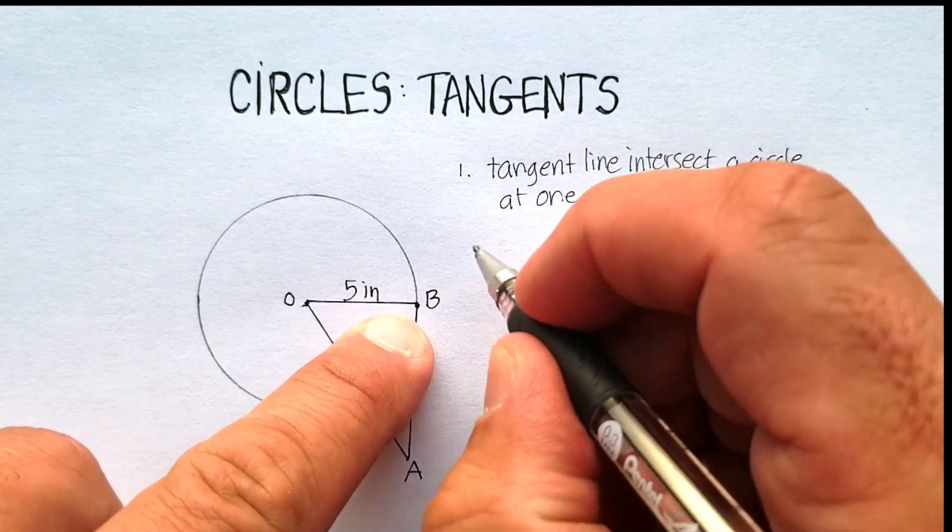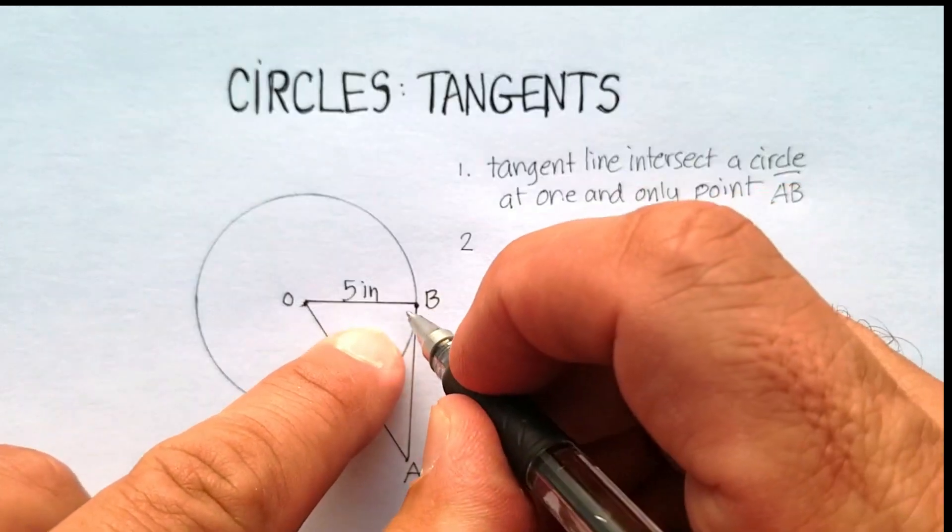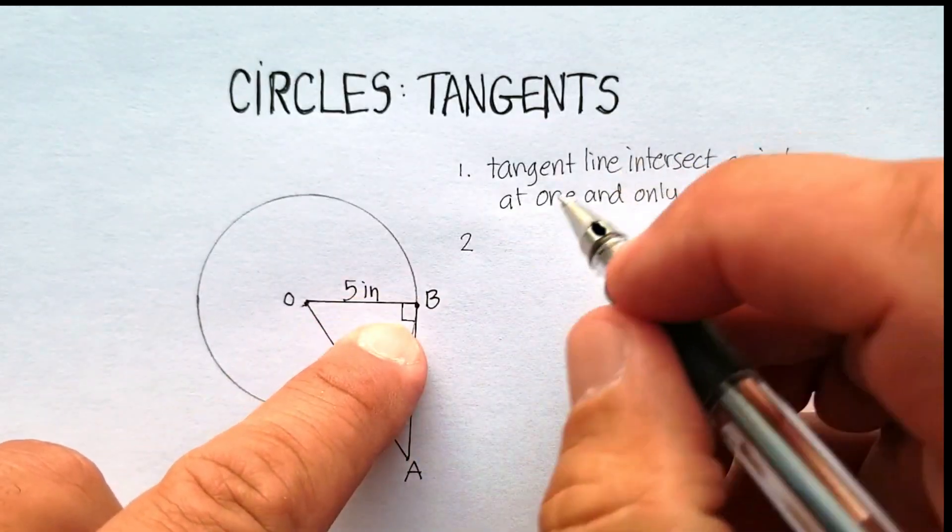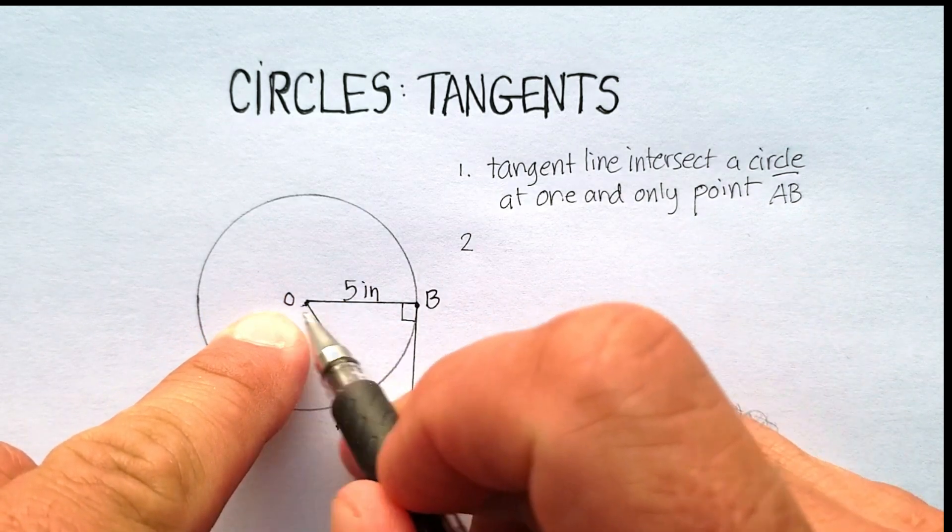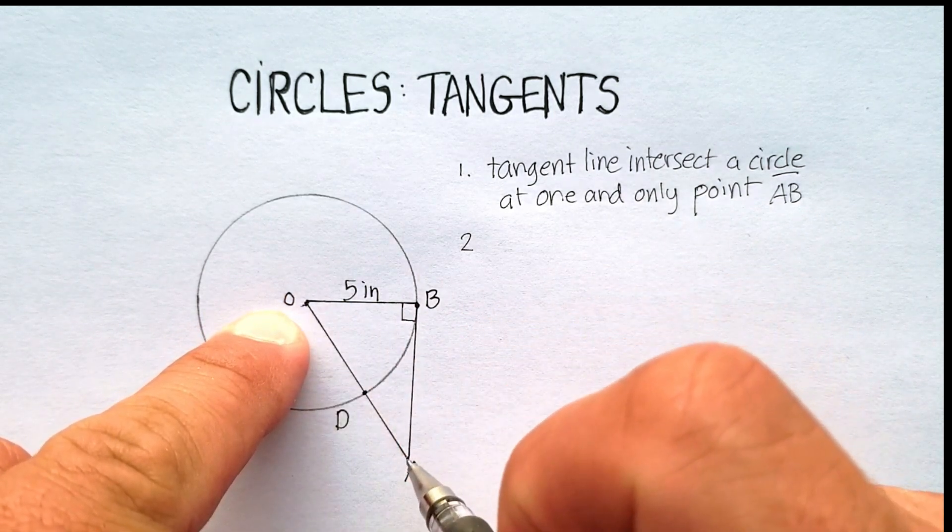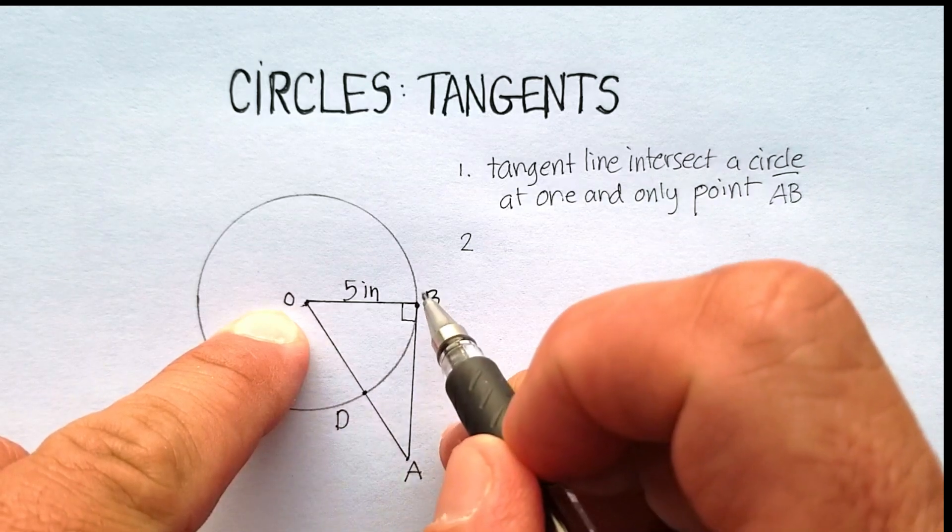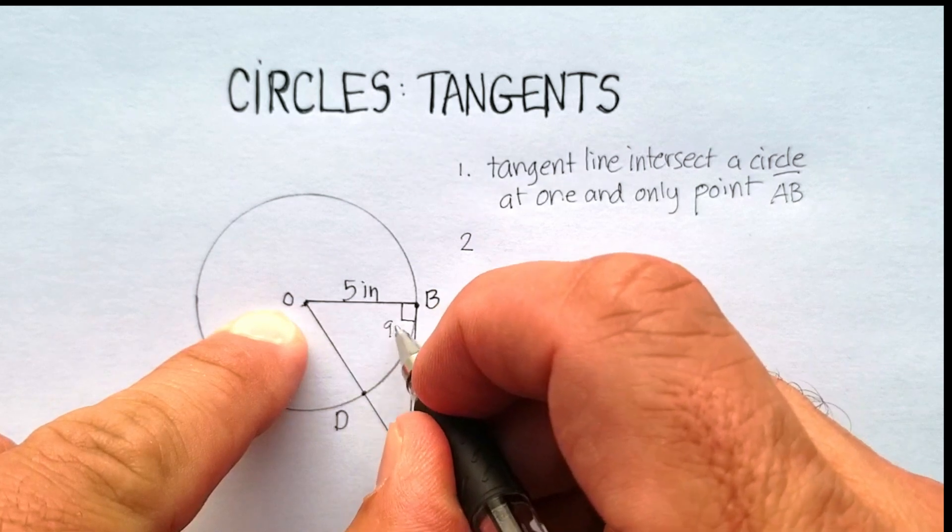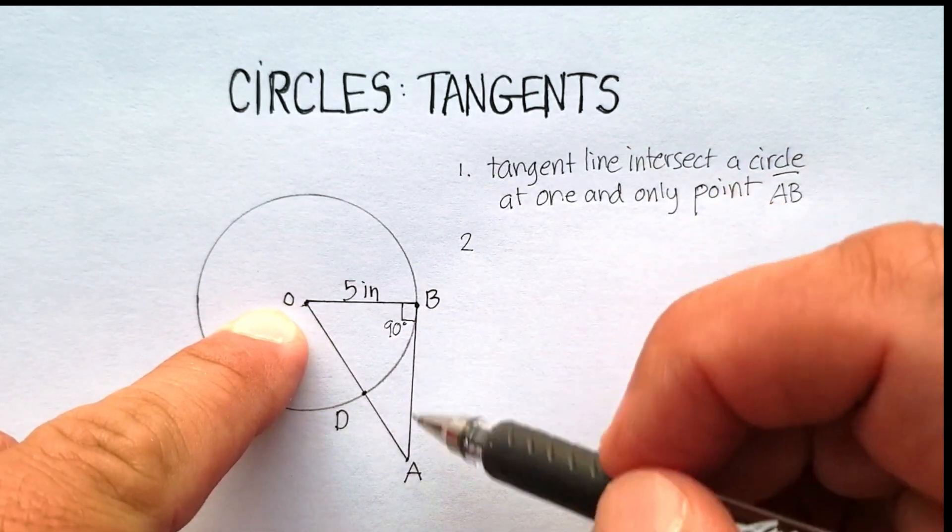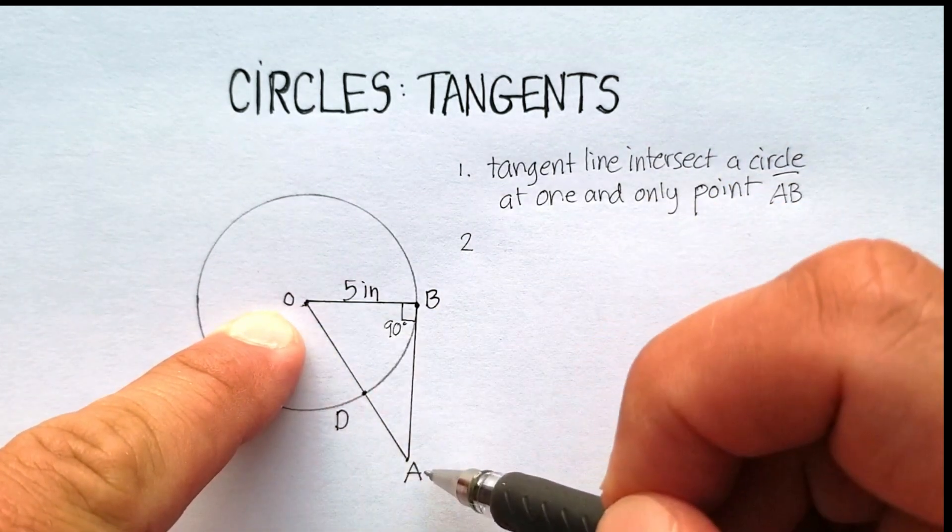The other properties of tangent lines is that they always form 90 degree angles with the center of the circle, in this case, B and O. Okay, so angle ABO would be a 90 degree angle.